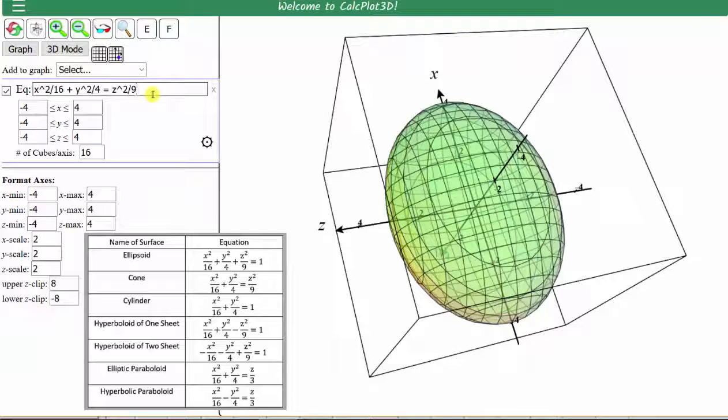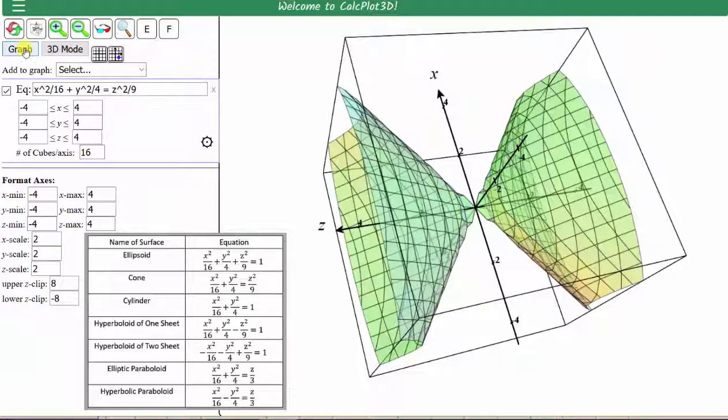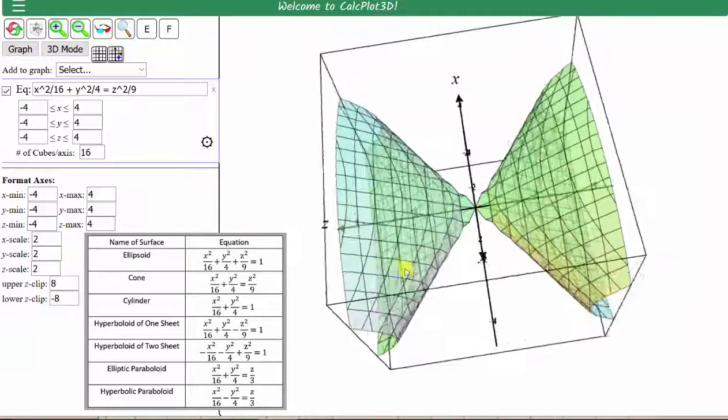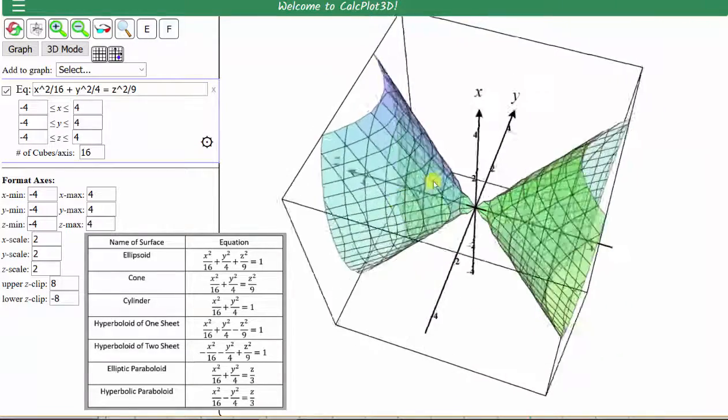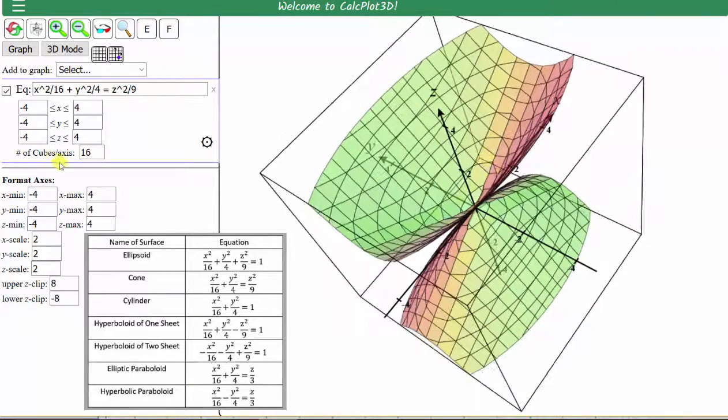And now we can press enter or click graph. Here's a graph of the cone. Notice how it's not really that smooth. We can make this more smooth by changing the number of cubes per axis. Let's change this to 30.